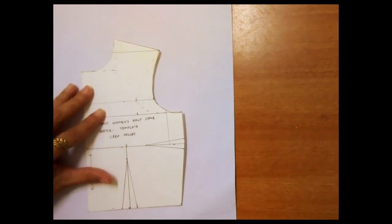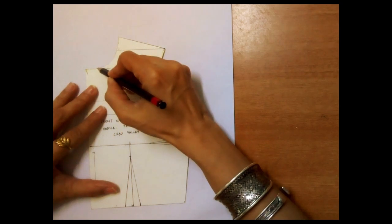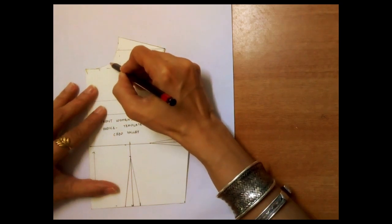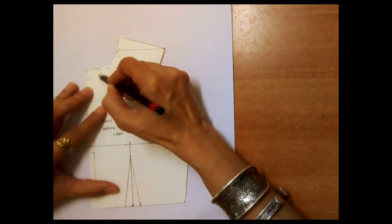Hello everyone. In this lesson, I will show you how to create neckline gathers by closing the darts in the front bodice. I am going to use the pivot method of dart manipulation in this demo.